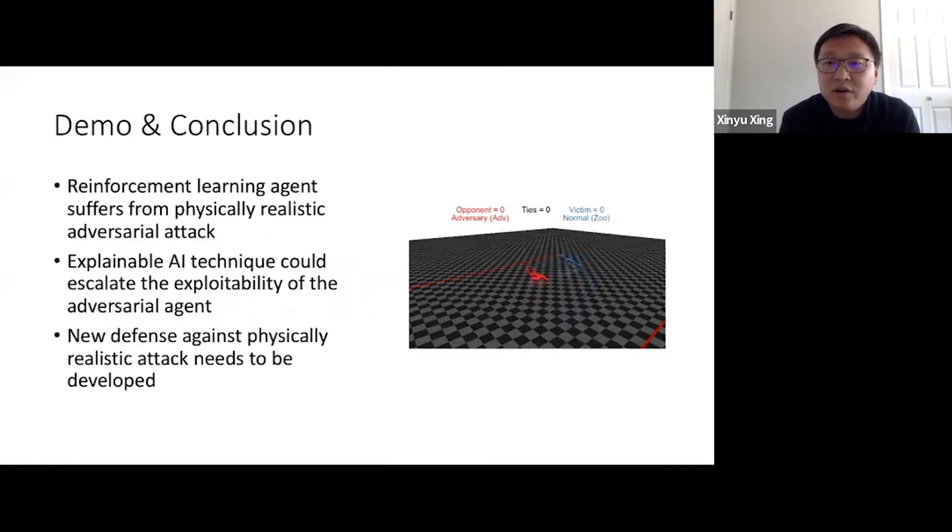Before I conclude this work, here is a demo showing you the power of this attack. As we can see in this game, we have two agents, red and blue. The goal of the blue is to bypass the white line behind the red agent, whereas the goal of the red agent is to block the path of the blue agent. In this game, the blue agent obtains reward if it is successful in passing the white line without falling down. Otherwise, the red agent will receive reward accordingly.